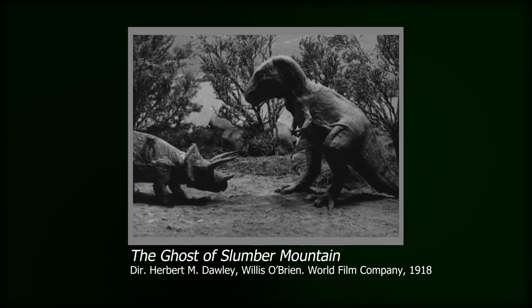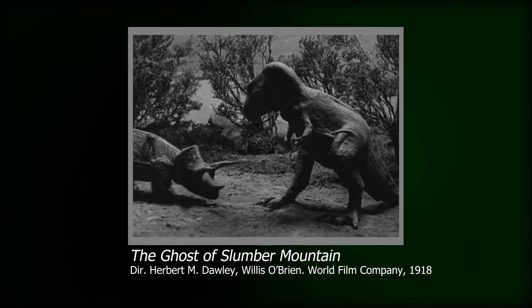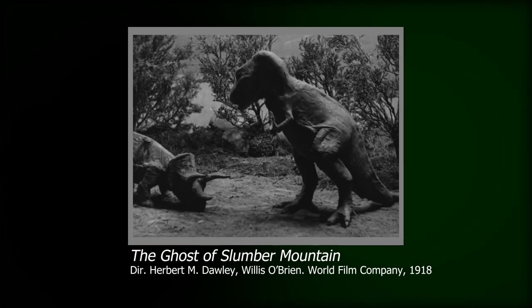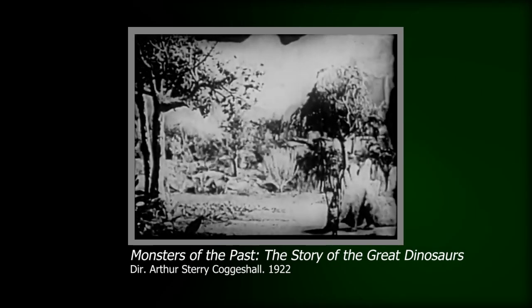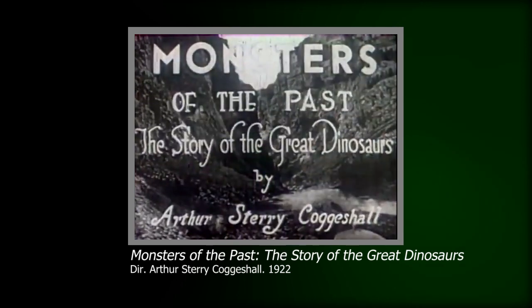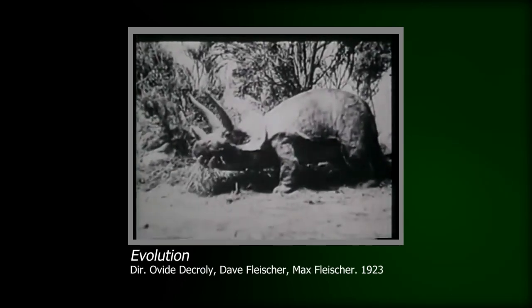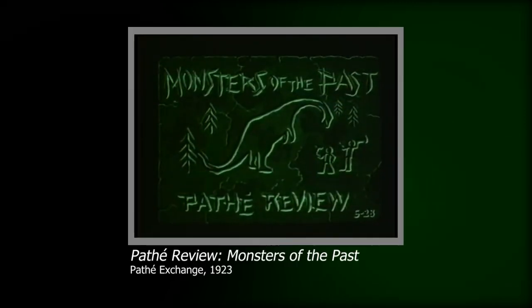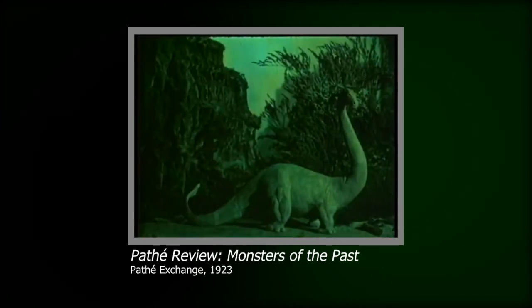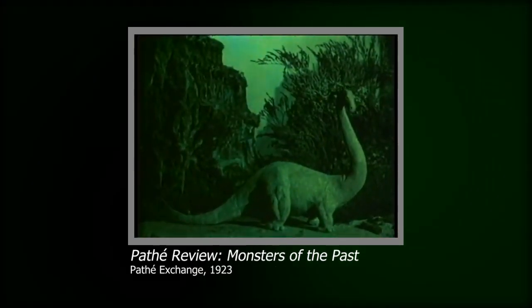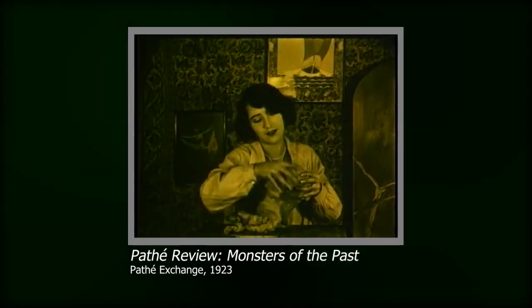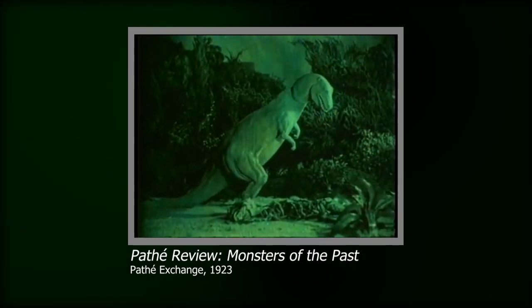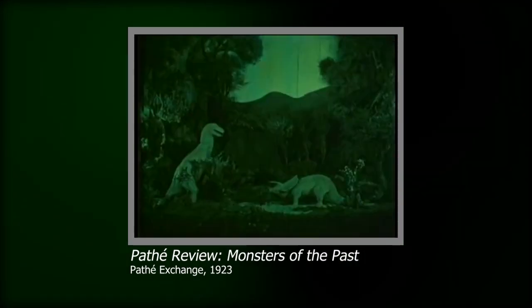The Ghost of Slumber Mountain proved that dinosaurs could truly be brought to life again, and it kind of blew the doors open for stop-motion dinosaurs to run wild. Footage from this film, along with Along the Moonbeam Trail, would be used in the 1922 documentary Monsters of the Past. Footage from Ghost would also be used in the 1923 documentary Evolution. Another documentary called Monsters of the Past — not to be confused with the other Monsters of the Past — would actually utilise its own stop-motion creations, dramatising animator and sculptor Virginia May creating a Tyrannosaurus before bringing it to life and showing it in battle against, you guessed it, a Triceratops.